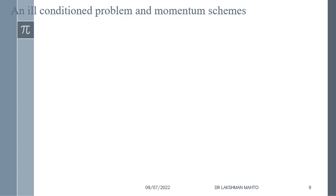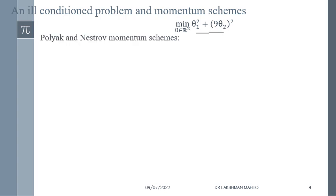Why did the last problem require 10,000 iterations? It was due to the ill-conditioning nature of that quadratic function. The quadratic function is differentiable and easy to find the gradient, but the problem was with the geometry — it was ill-conditioned. The Hessian measures the curvature of the function. For a function of two variables, the Hessian is a 2×2 matrix obtained by finding all second-order partial derivatives. The Hessian measures the ill-conditioning.